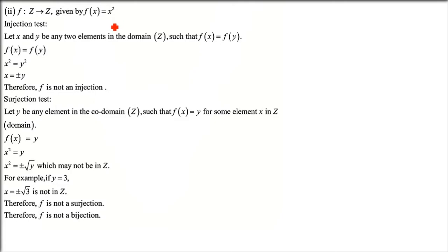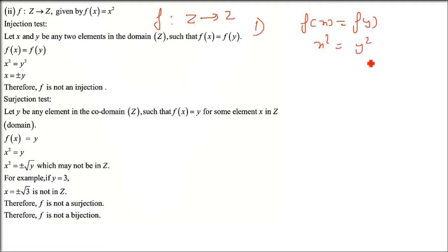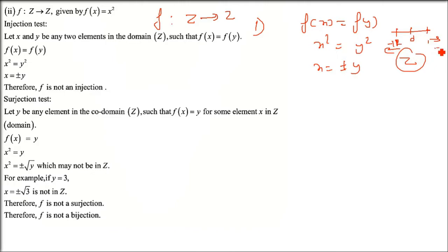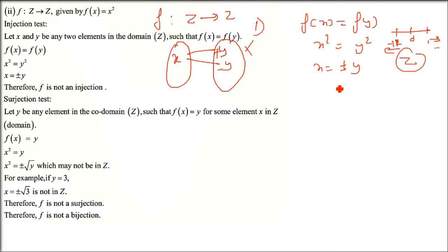The second question has the same function f(x) = x² but the domain and codomain have changed to integers (ℤ), which includes all positive and negative integral values. Checking injection: x² = y² gives x = ±y. Since integers include both positive and negative values, for example 1 and -1, x is not necessarily equal to y. So injection fails.